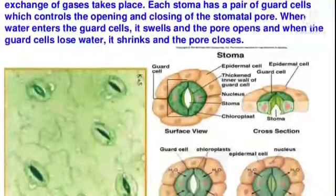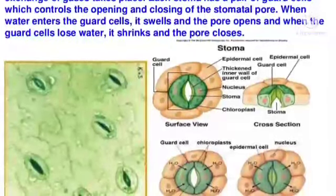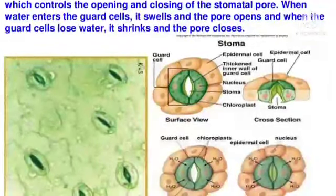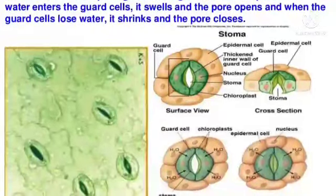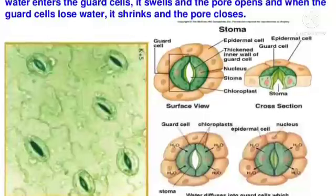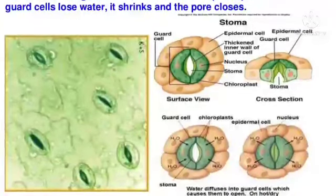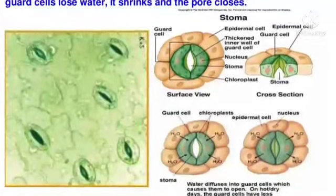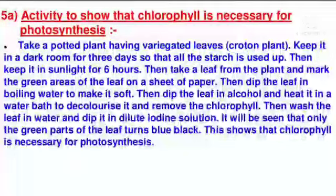Stomata are the tiny pores present in the leaves through which exchange of gases takes place. Each stoma has a pair of guard cells which controls the opening and closing of the stomatal pore. When water enters the guard cells, it swells and the pore opens. When the guard cells lose water, it shrinks and the pore closes.